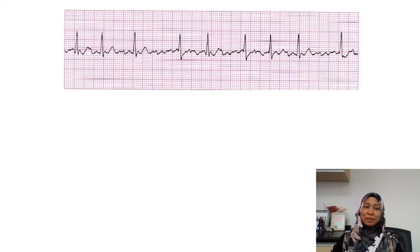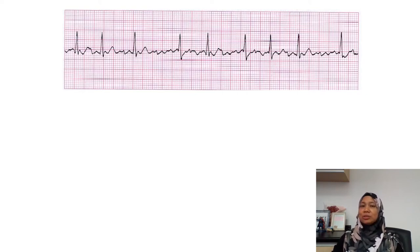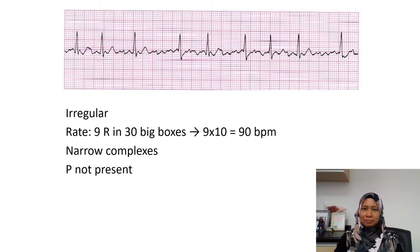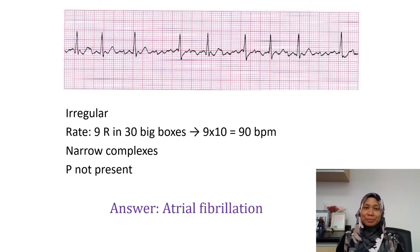The next strip shows that the RR interval is not the same, so this is an irregular rhythm. There are narrow complexes and the rate is about 90 beats per minute. No P wave is present — you cannot see a P wave there. So this is atrial fibrillation.